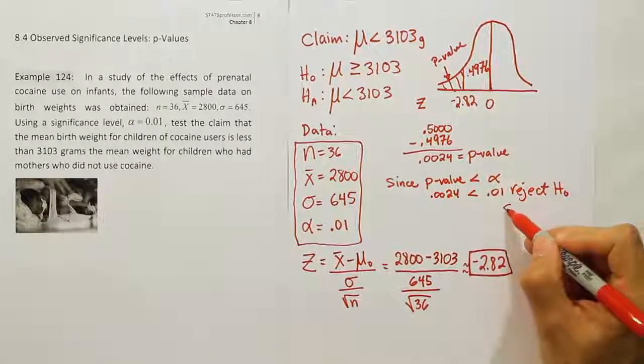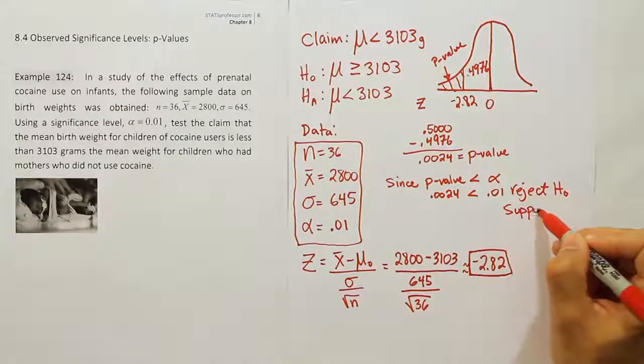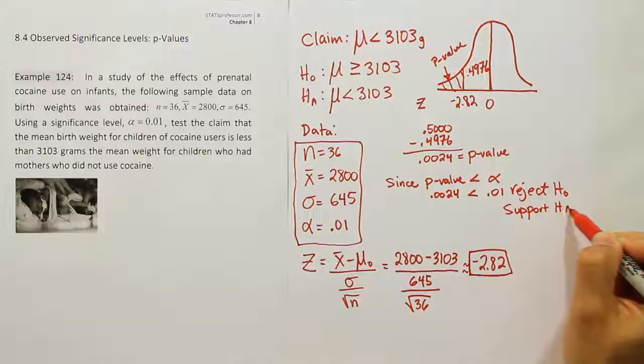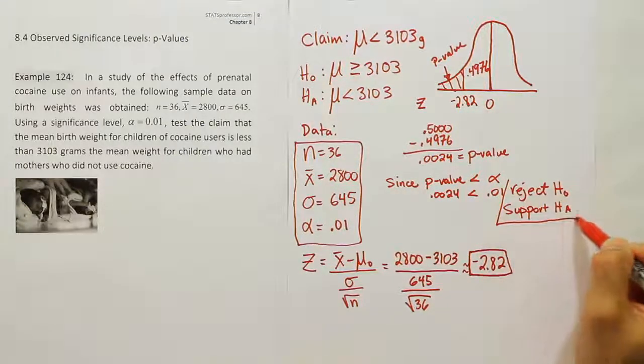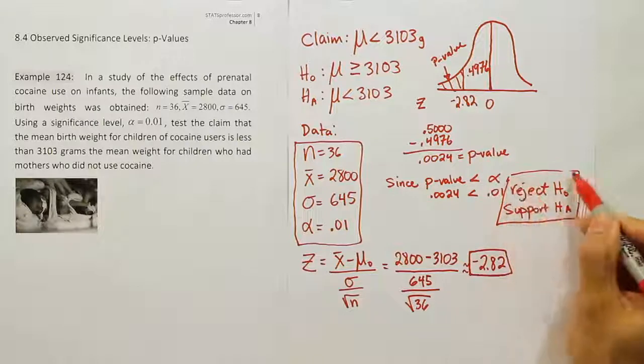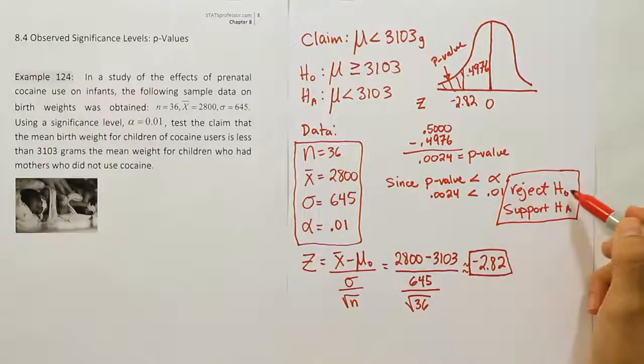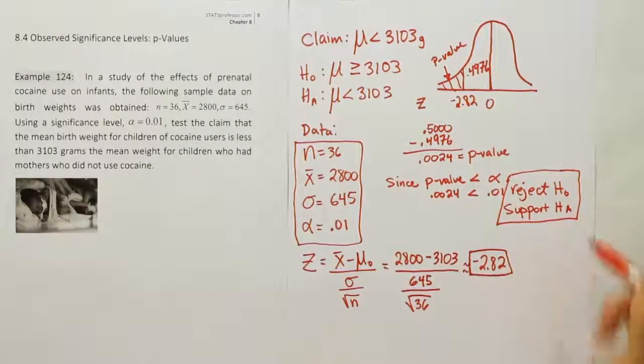Remember, when you reject the null, you at the same time support the alternative. So this is our pair of conclusions here. Because we rejected the null, we supported the alternative.